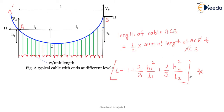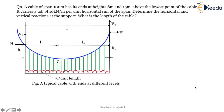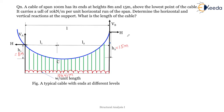You may ignore the theory part — we have to solve a numerical. The formula for cable length is what we need. The question: a cable of span 100 m has its ends at heights h1 = 8 m and h2 = 15 m above the lowest point. It carries a UDL of 10 kN/m per unit horizontal run.